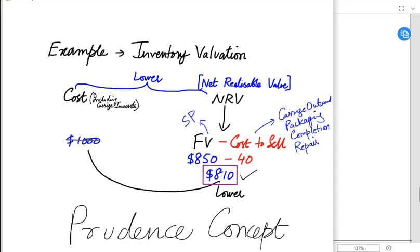Prudence Concept states that profit and asset shall not be overstated. If we are keeping the inventory at $1000, we are basically overstating our assets of inventory by $190. And Prudence also says that if there is any anticipated loss, if there is a loss that is going to be incurred in the future, that anticipated loss shall be booked immediately.